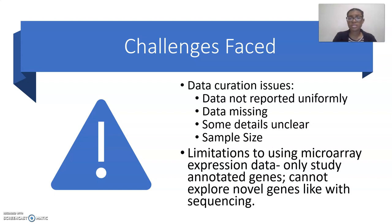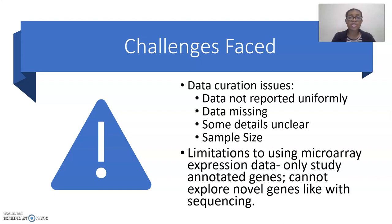There were some challenges faced, due to data curation. Data was not reported uniformly, data was missing, some details were unclear, and the sample size was limited. Out of 133 datasets, I chose 5 datasets to gain results because most of the datasets lacked information on the age, gender, disease state, or ethnicity of the patient. There were also limitations to using microarray expression data. We only focused on the Illumina microarray platform, and that caused the data samples between females and males to be unequal.